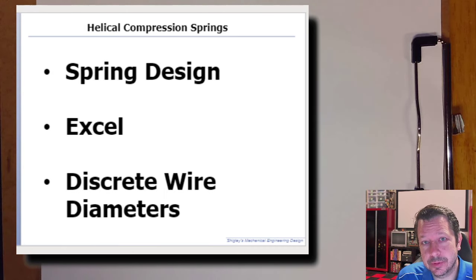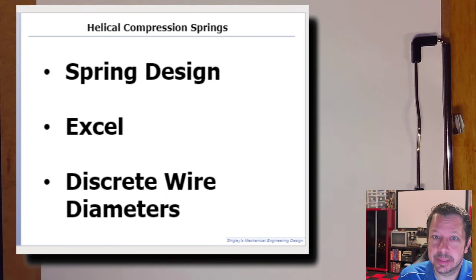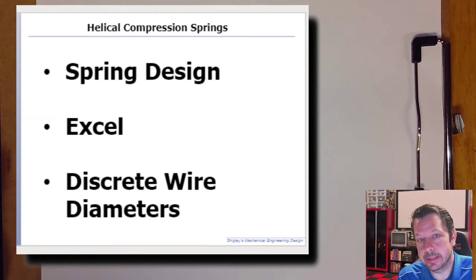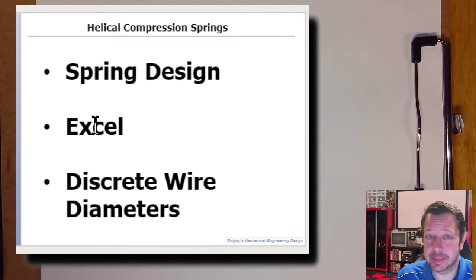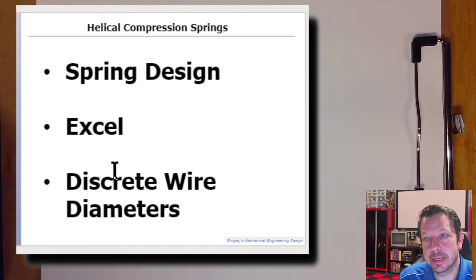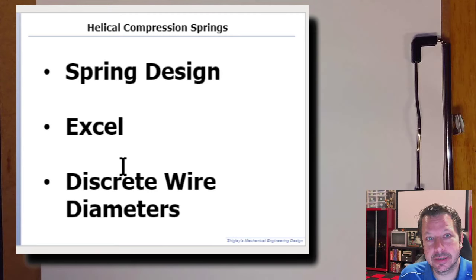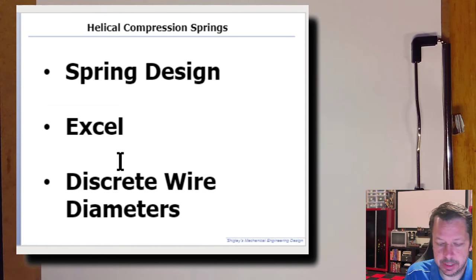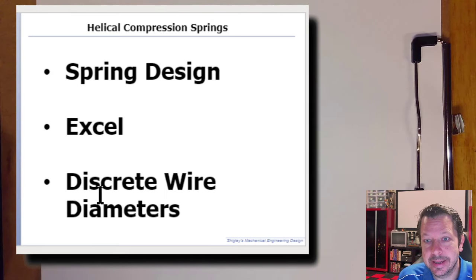We're going to look at another topic on spring design, very similar to the last topic, except this time we're going to use Excel to calculate the necessary values for determining which spring is best for a situation. We'll look at spring design using a spreadsheet program and consider discrete wire diameters — it's simpler to find a spring that already exists versus custom-tuning the wire diameter.